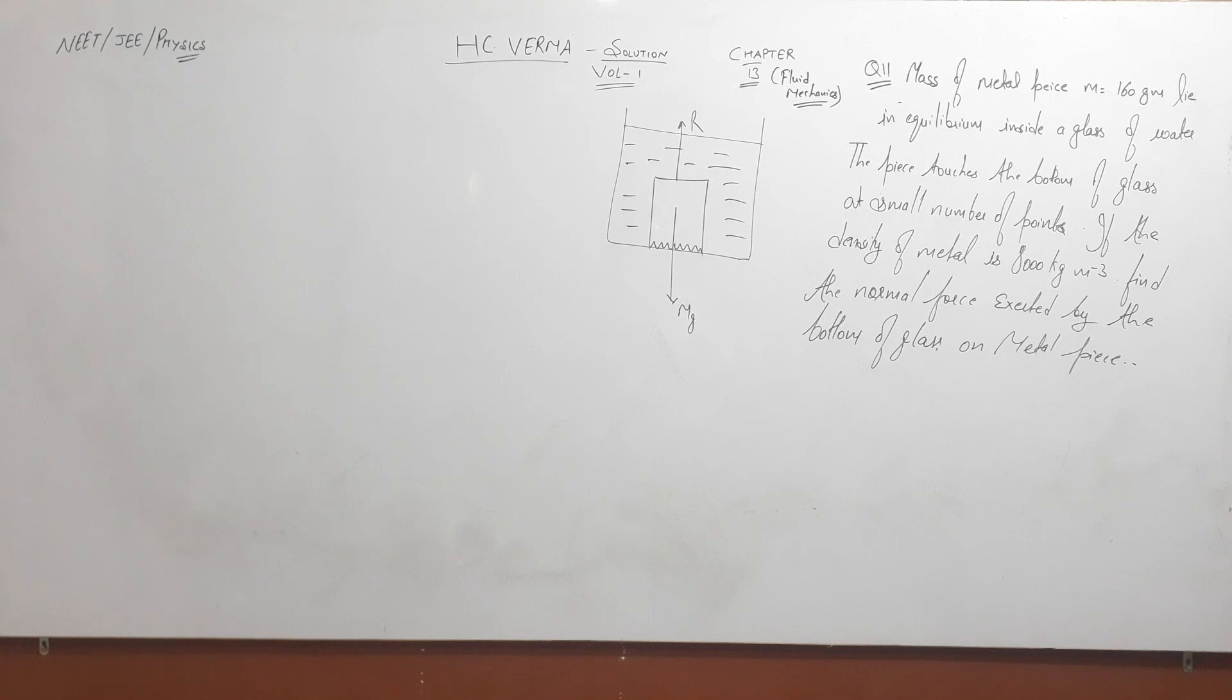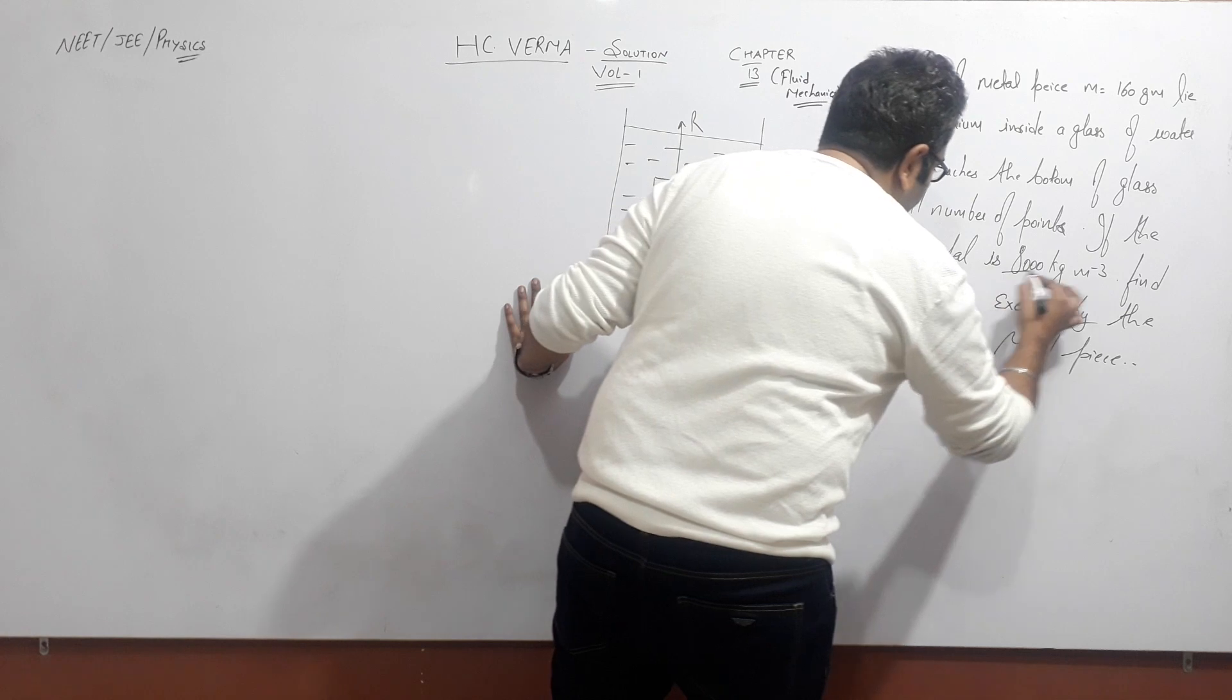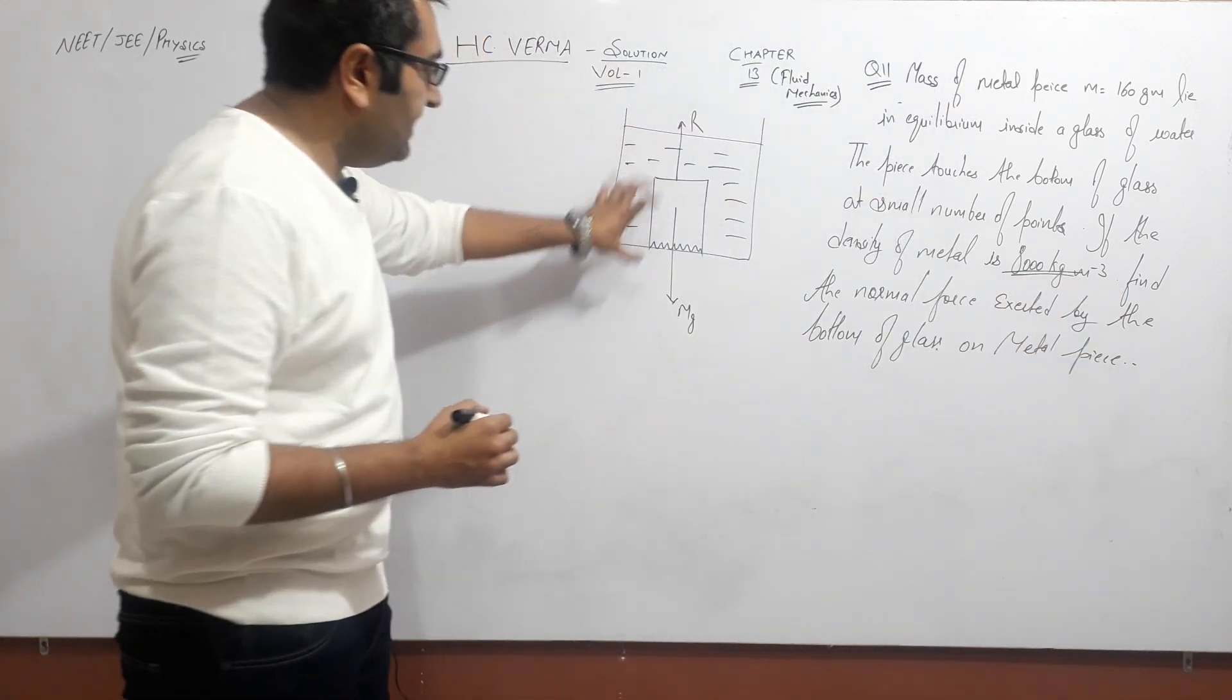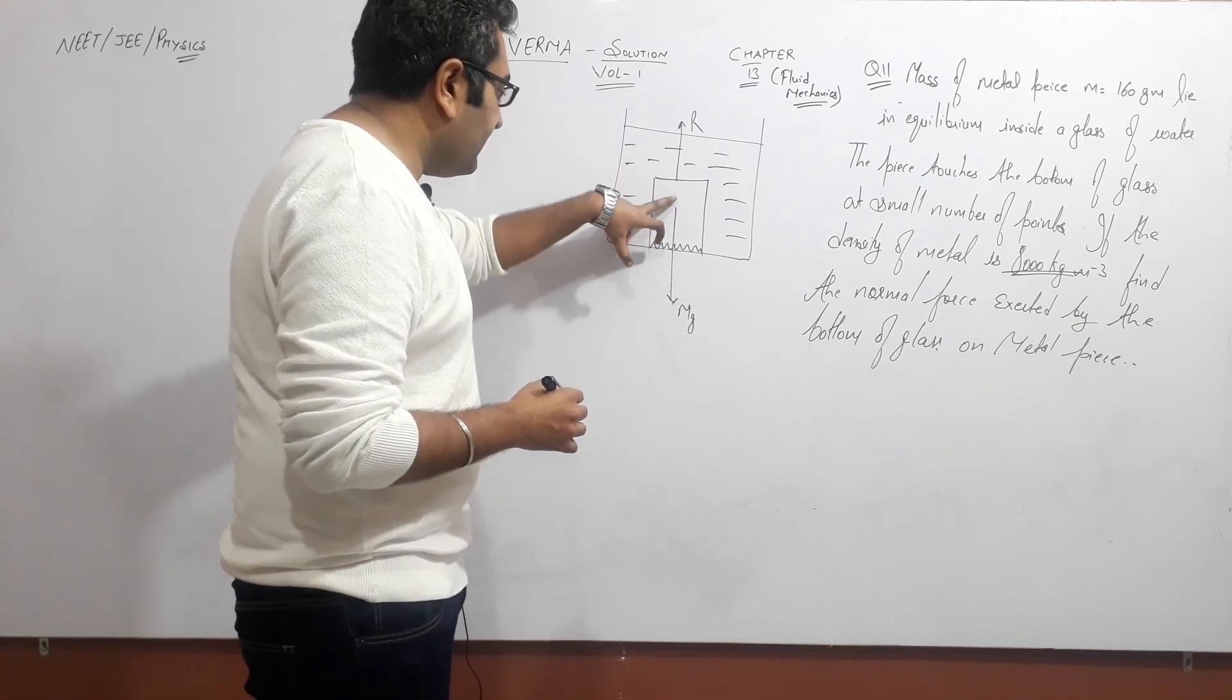Hello guys, welcome to the channel. This is question number 11, chapter number 13, S.E. Verma fluid mechanics. A metal piece of mass 160 grams lies in equilibrium inside a glass of water. The piece touches the bottom of the glass at a small number of points. If the density of the metal is 8000 kg per meter cube, find the normal force exerted by the bottom of the glass on the metal piece. So in this question, the basic part is given that I have a metal with density given. But what happens is that the metal block will sink properly and it will put its weight in action.